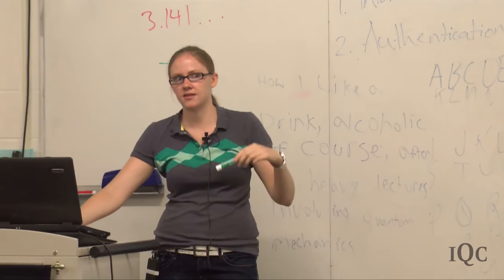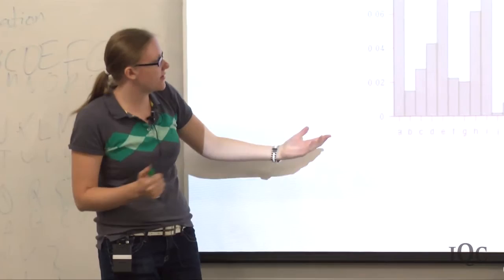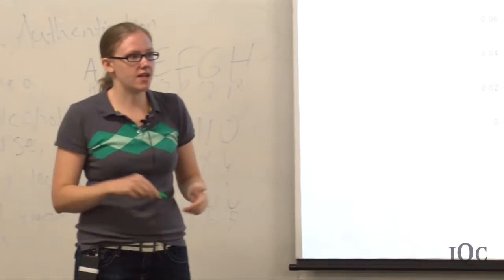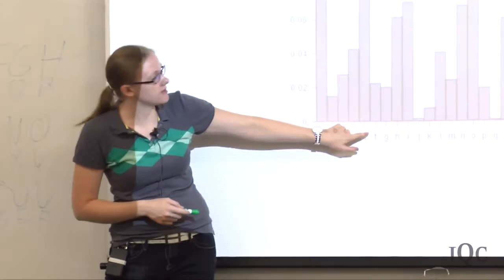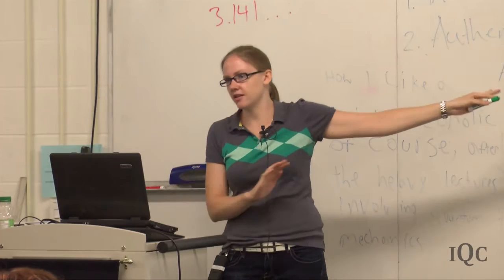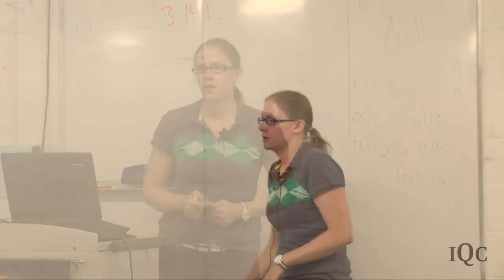Instead, you can do a frequency attack, knowing that certain letters in the alphabet appear much more often than others. For instance, if a letter appears very often, it has a very low probability of being a J. Generally, if a letter appears very often, you could guess it's an E. This actually completely breaks the cryptosystem. You can even break these codes when there are no spaces, still using just the 26-letter alphabet.